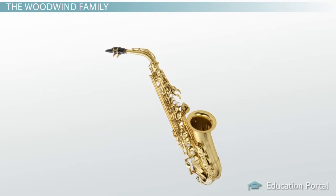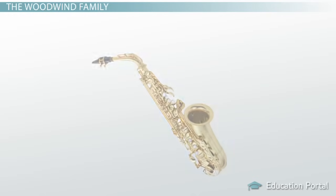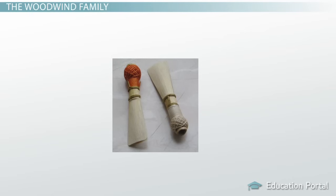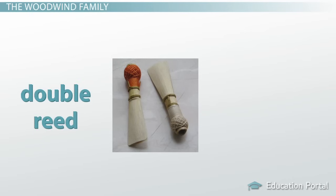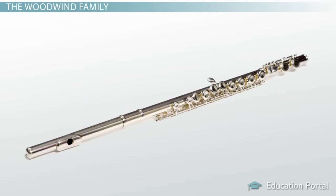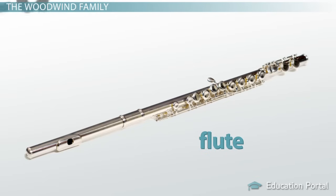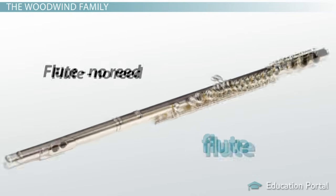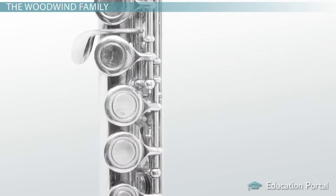Saxophones are fairly new, having only been created in the mid-1840s, so there aren't many orchestral pieces that include saxophone. Some woodwind instruments have a reed with two parts called a double reed — instruments like the oboe and the bassoon use a double reed, where both reeds vibrate and tend to create a nasal sound. There's also one woodwind that uses just the wind: the flute. The flute has no reed; instead, the player blows across a hole in the instrument, much like blowing across the top of a pop bottle.